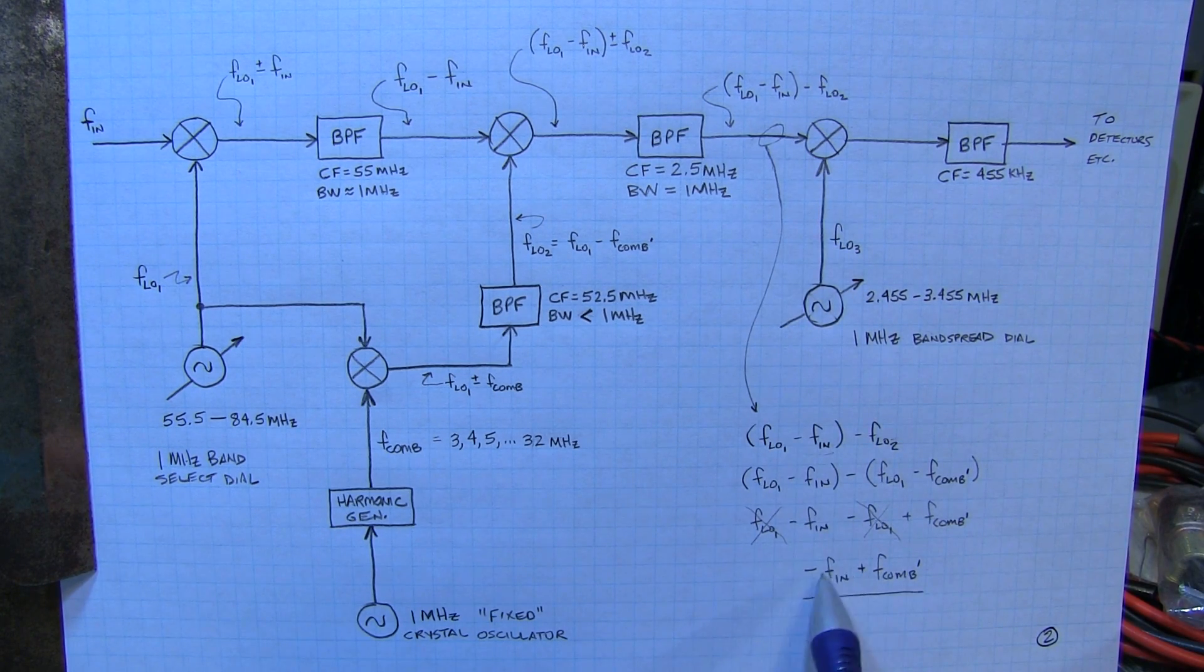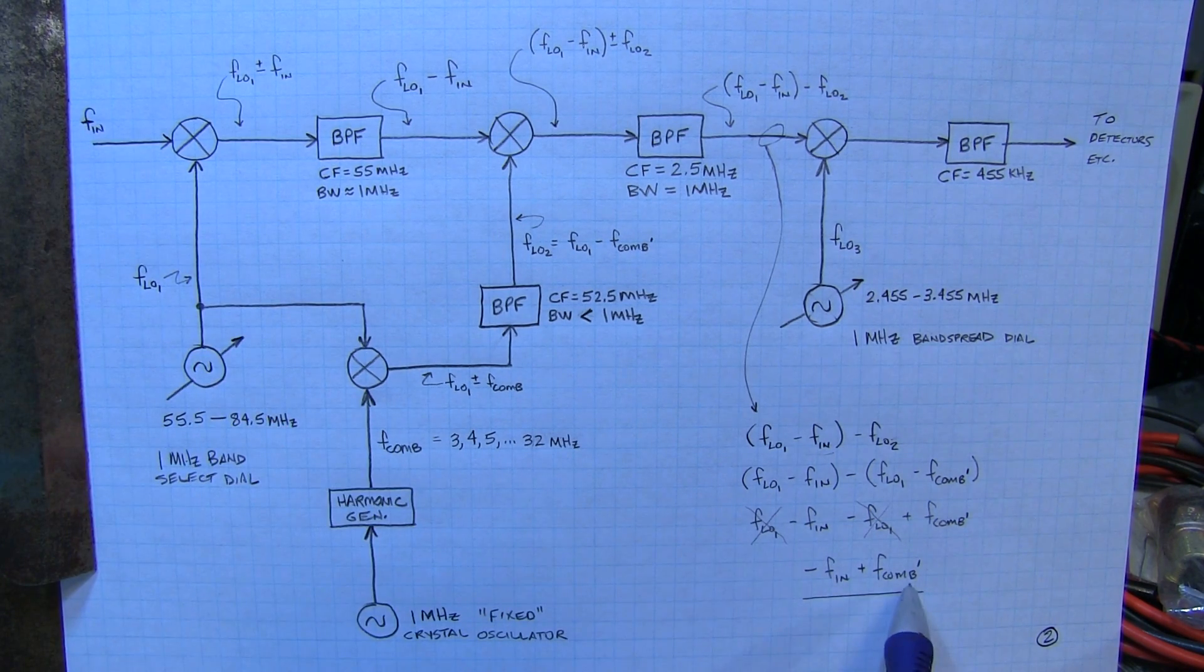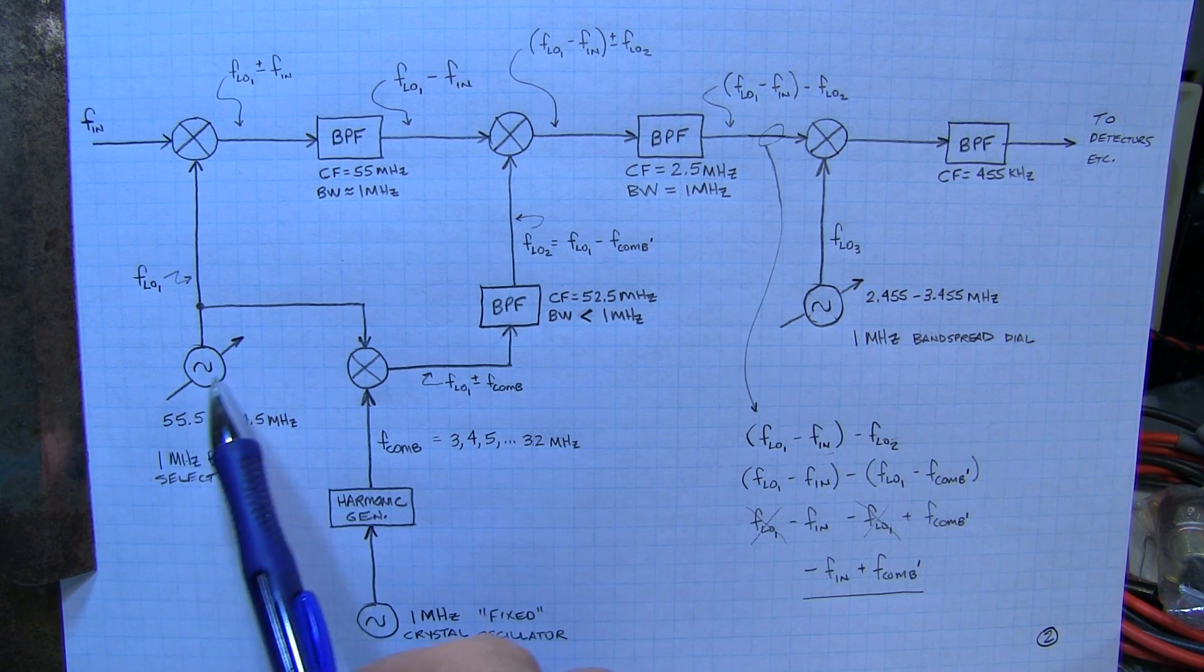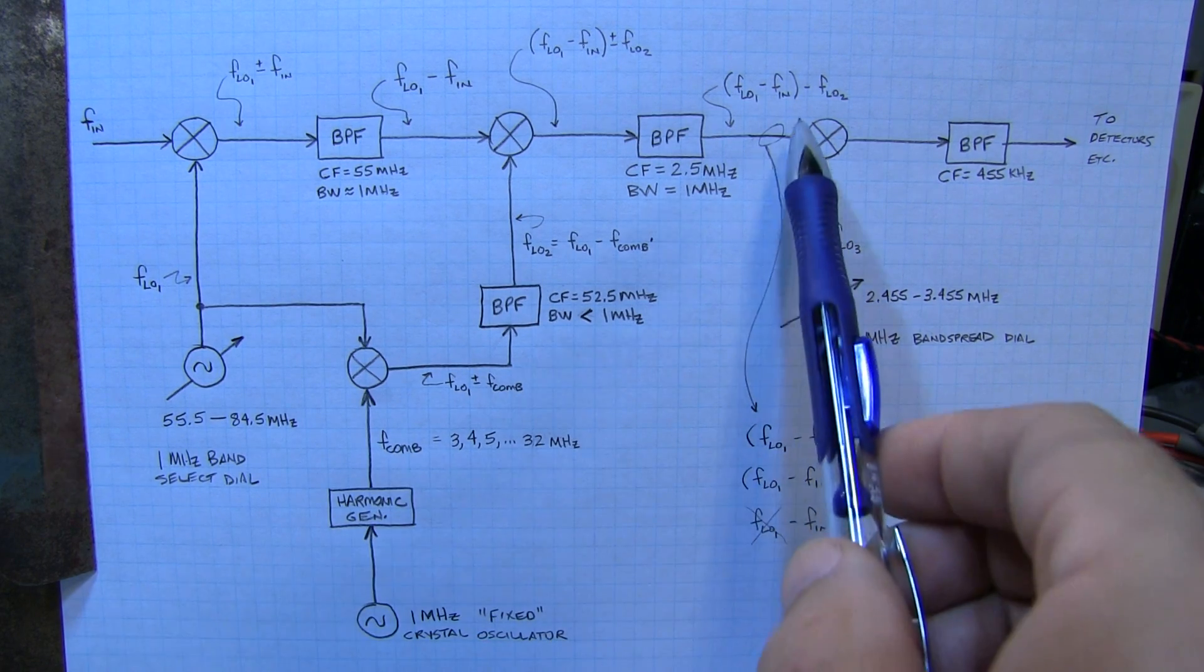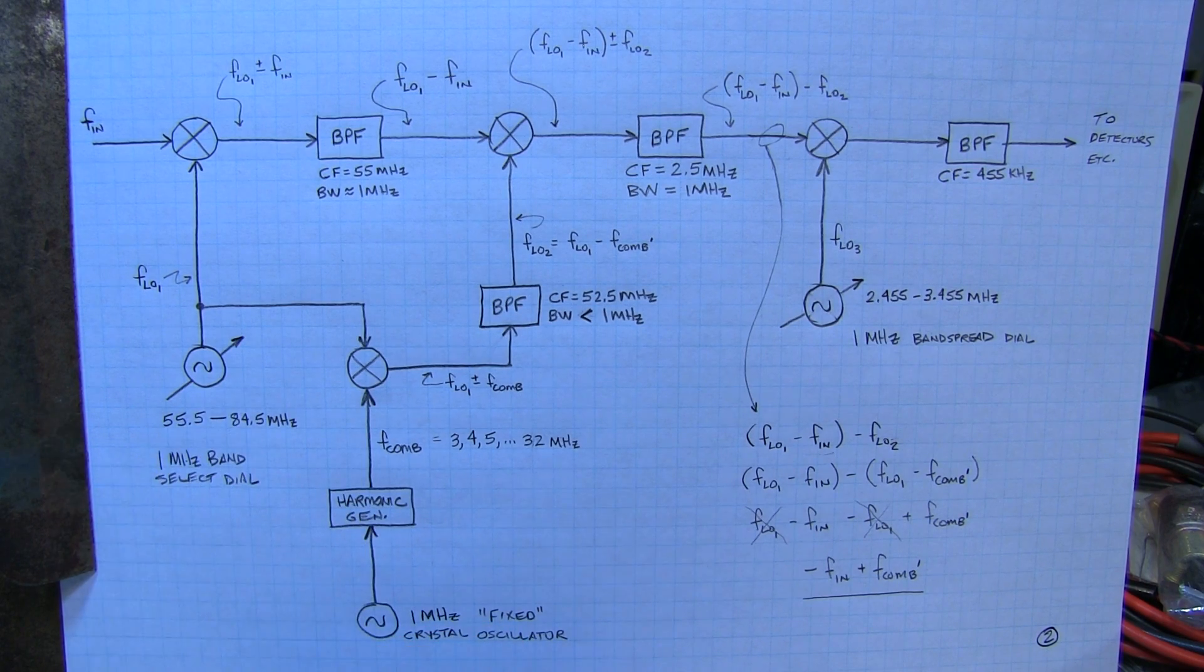And what we're left with here is a frequency that is dominated only by our input frequency, which is what we want to listen to, and the comb frequency, which is crystal controlled. So now regardless of how much drift is on our original first local oscillator, it drops out of the equation at this point. So we've essentially canceled the drift of that first LO. And that's really the magic of the Wadley loop.